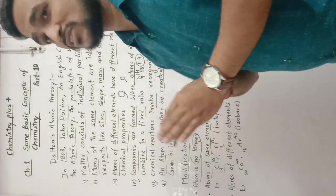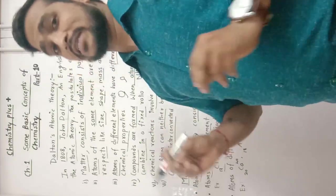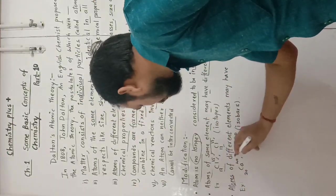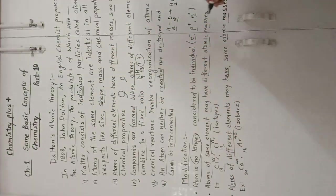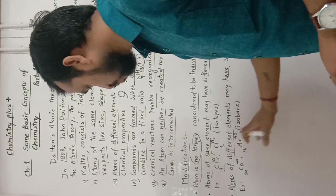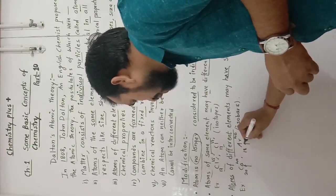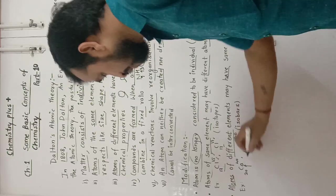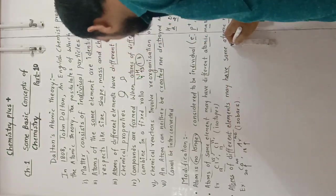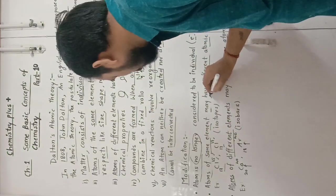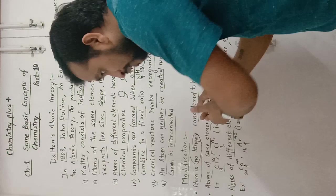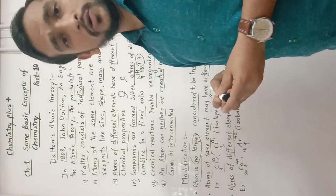It may or may not be possible that atoms of the same element have the same masses. The third modification: atoms of different elements may have the same atomic masses. For example, calcium and argon are two different elements but have the same mass number. So different elements can have the same atomic masses, and the same element can have different masses.